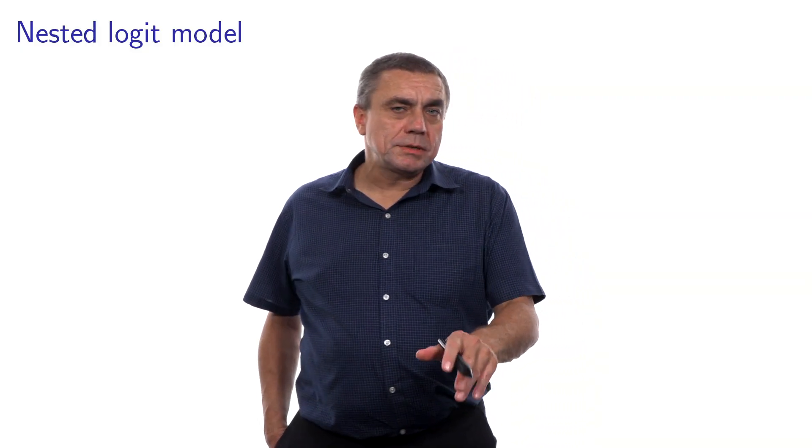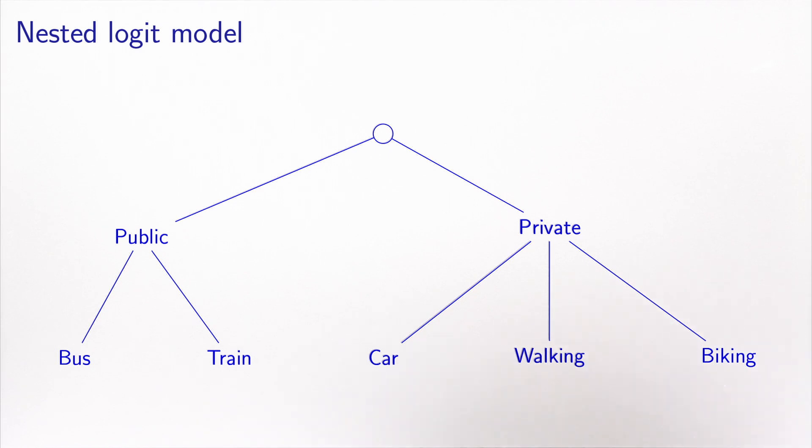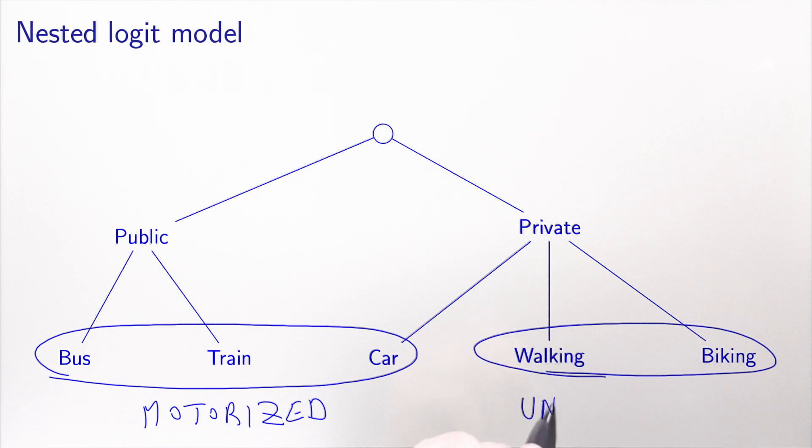When I proposed this model to my colleague, he said, well, but there are other reasons why these alternatives may be correlated. Actually, bus, train and car, they are all motorized alternatives, while walking and biking are unmotorized.